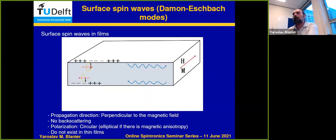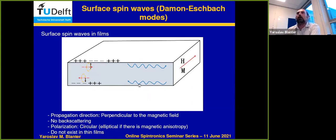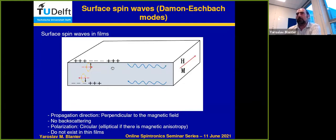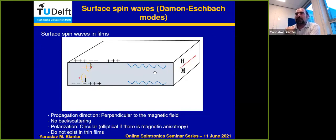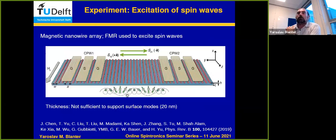I will give a few examples of unusual physics — classical but still very unusual. One story is about YIG films. We already talked about Damon-Eshbach modes, which in a film are also surface modes. They propagate perpendicular to magnetization — for example, if magnetization is in one direction, the mode propagating along the top surface goes to the right, and the mode along the bottom surface goes to the left. So they don't backscatter; they're really chiral. There are some caveats I will come to.